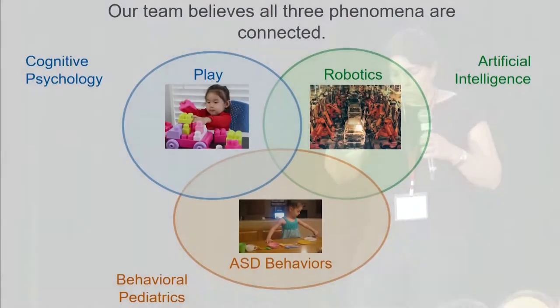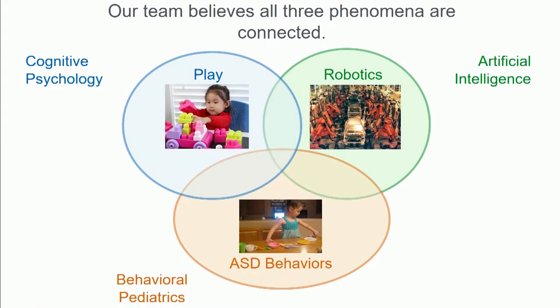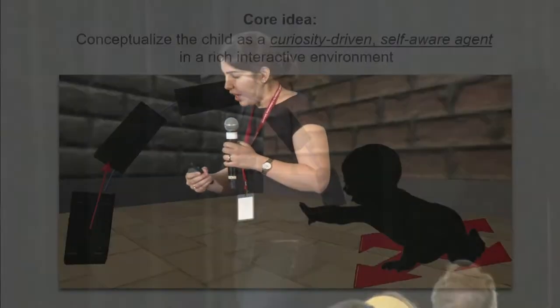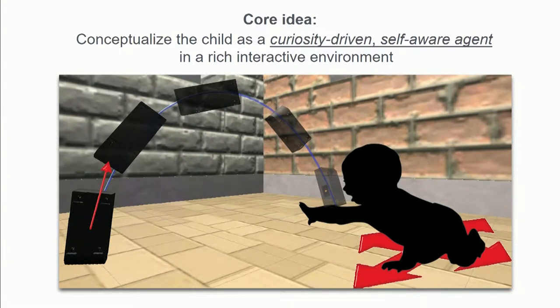That's another motivation of this project. Our team thinks that the development of children in play, human-robot interaction, and the atypical behaviors seen in children on the ASD spectrum are all connected through a fundamental reason. The core idea is that we can think of children as curiosity-driven, self-aware agents interacting in a rich environment — and intrinsically motivated agent-based models are the common thinking shared across all our different fields.